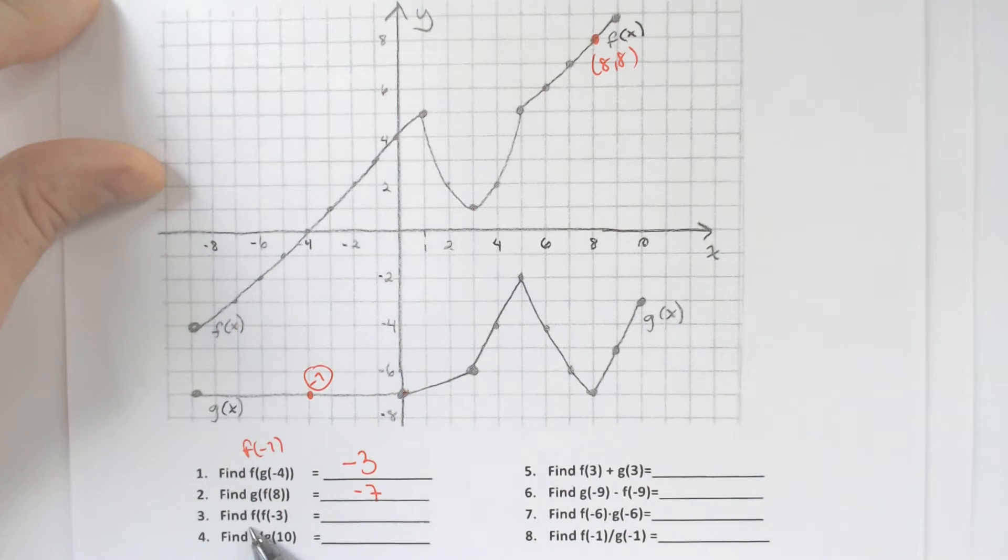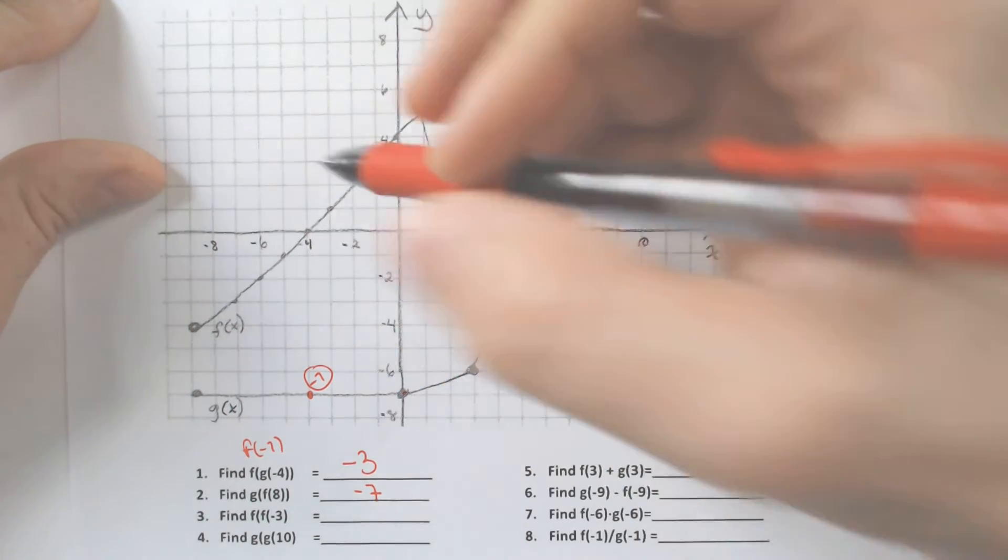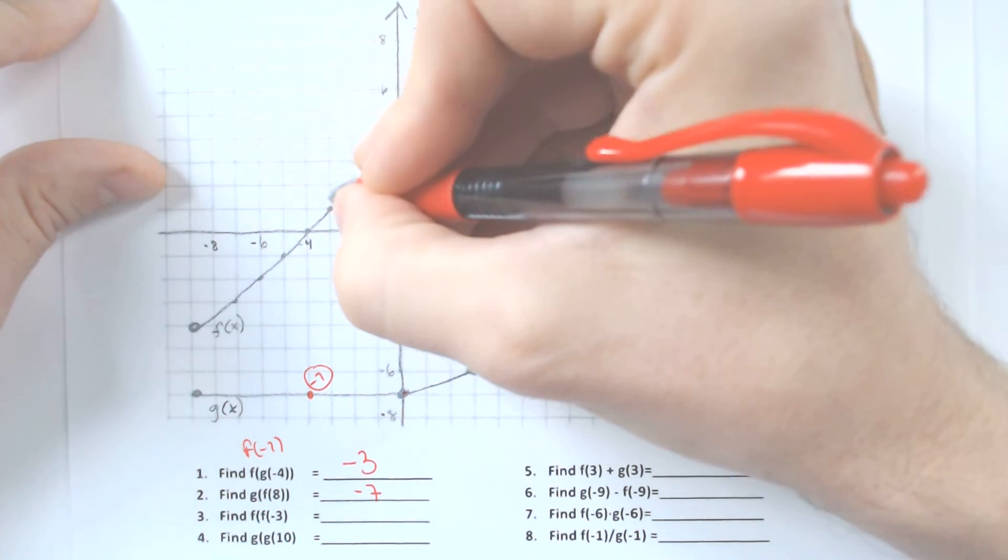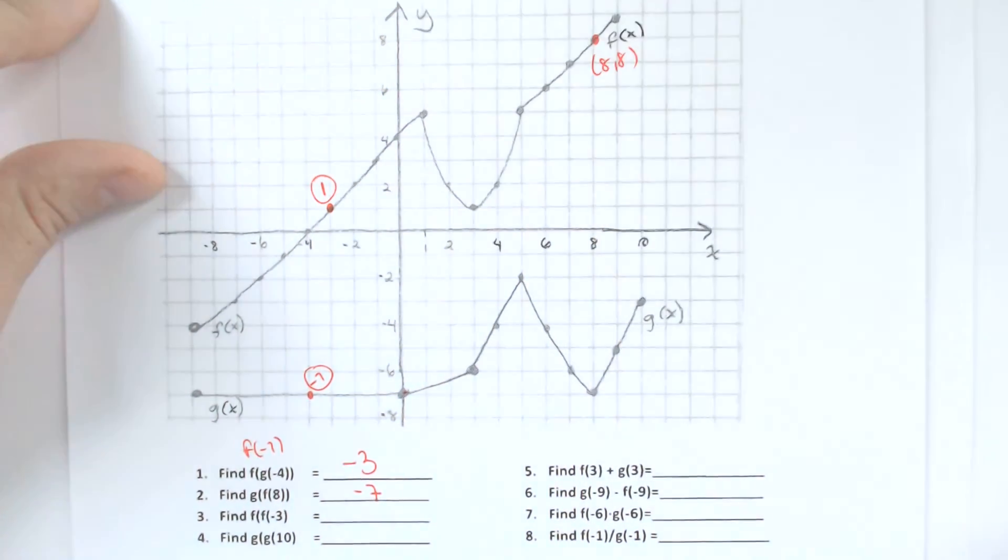Oh, I like this one, f of f of negative 3. So we start by plugging in negative 3 into the f of x function, which is 3 to the left for negative 3, which spits out the number 1.